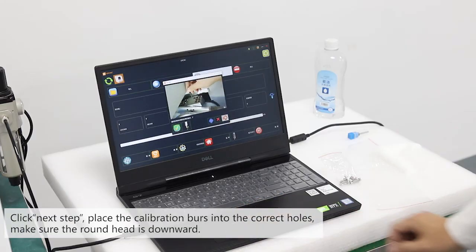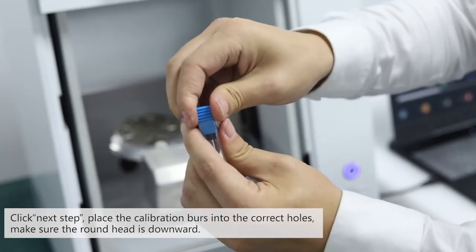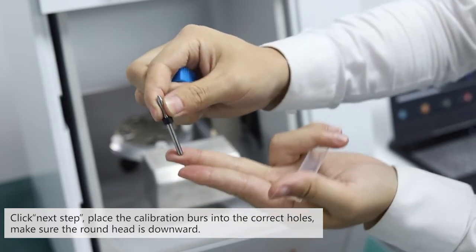Click next step. Place the calibration bars into the correct holes. Make sure the round head is downward.